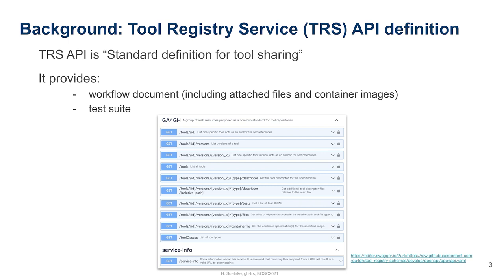The Tool Registry Service API is an API for sharing workflows and tools. It responds via the TRS API with workflow documents, including workflow attachments and container images, and test suites.